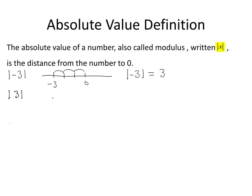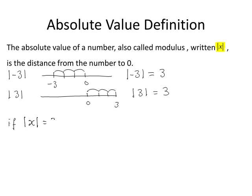The absolute value of three is the distance from three to zero, which is again three units, so the absolute value of three is equal to three. Since the distance from any number to zero cannot be negative, the absolute value is always positive. If you are told that the absolute value of x is equal to three, then x could be equal to three or x could be equal to minus three, as we've seen from this example.